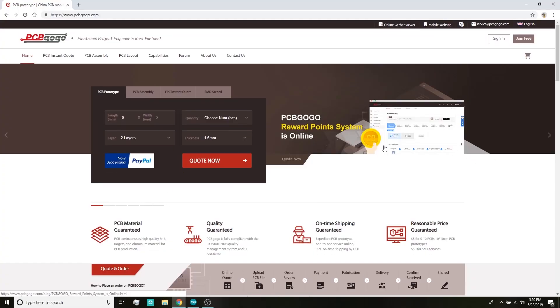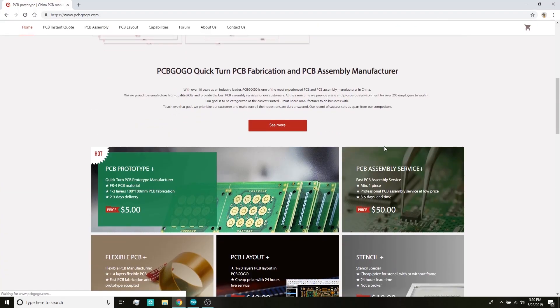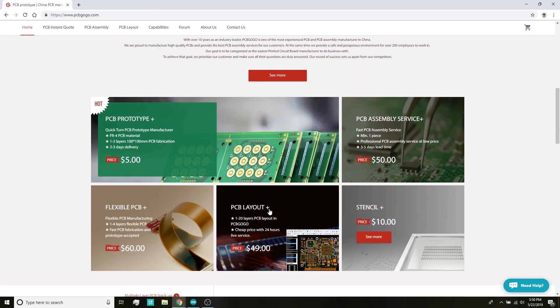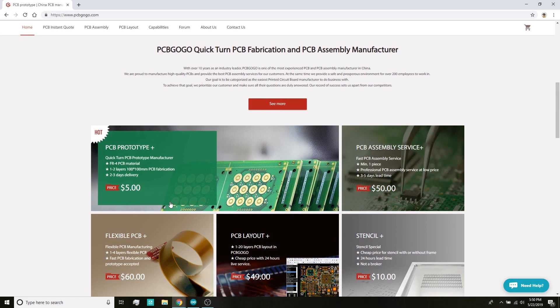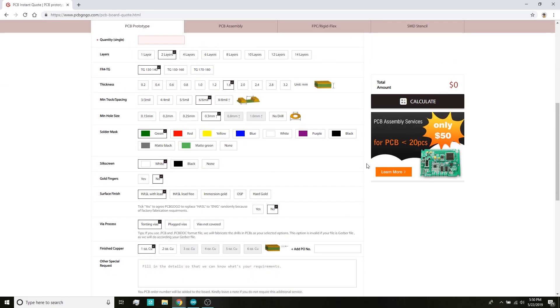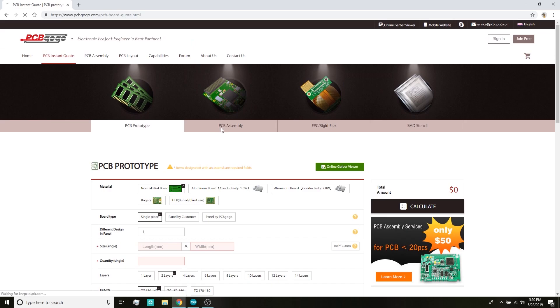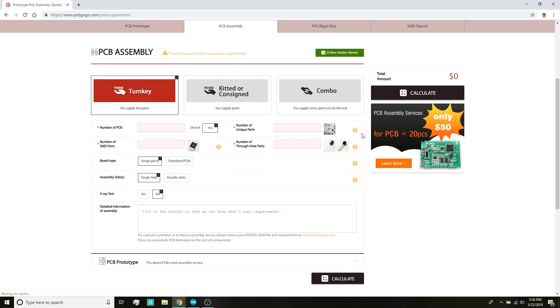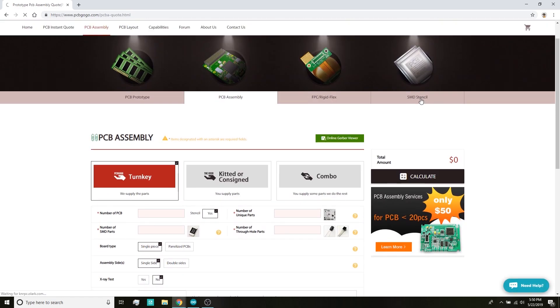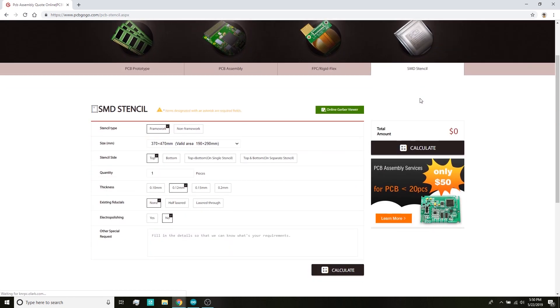I recently came across PCBGo.com, they are one of the most experienced PCB manufacturers from China. They offer 10 PCBs for 5 dollars only with several shipping partners. They even offer 24 or 48 hour express service. Apart from getting your PCBs manufactured, you can even get PCB assembly, layout, and stencil manufacturing as well. Do check them out, all the relevant links will be in the description box below.